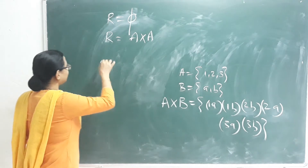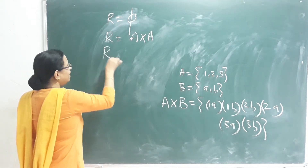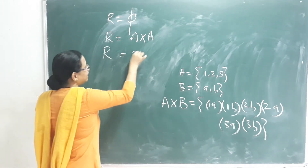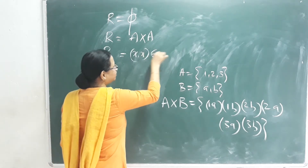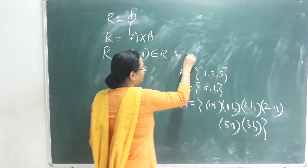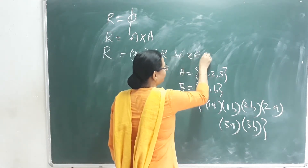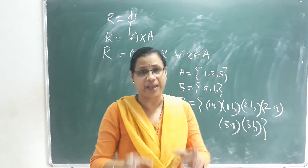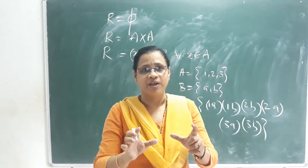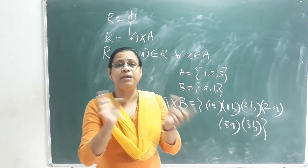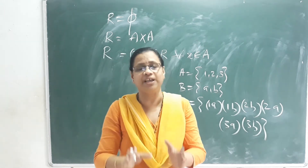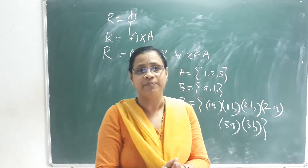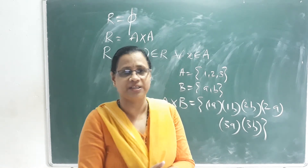The third type is the Reflexive Relation. A relation R is reflexive if (x, x) is an element of R for all x that is an element of A. That means every element maps to itself — the same image. We call it a reflexive relation.